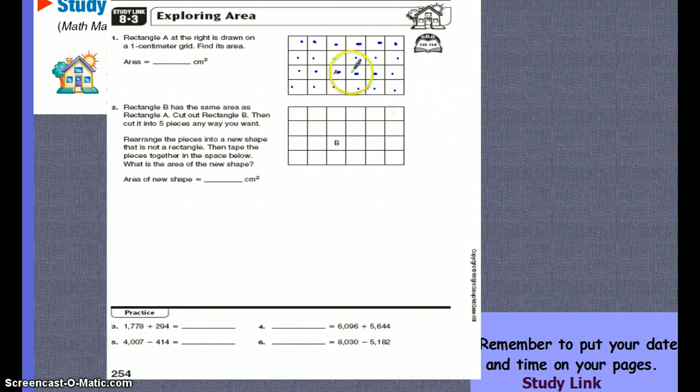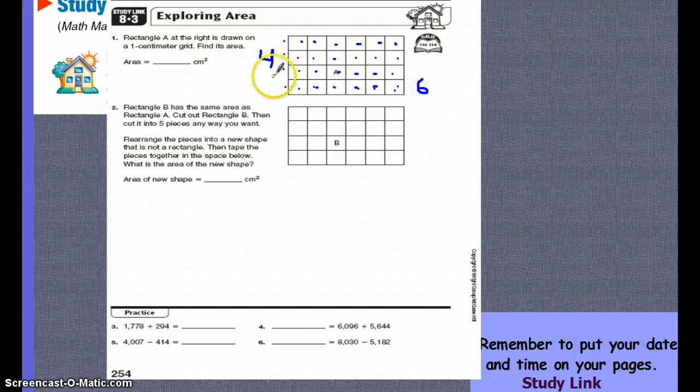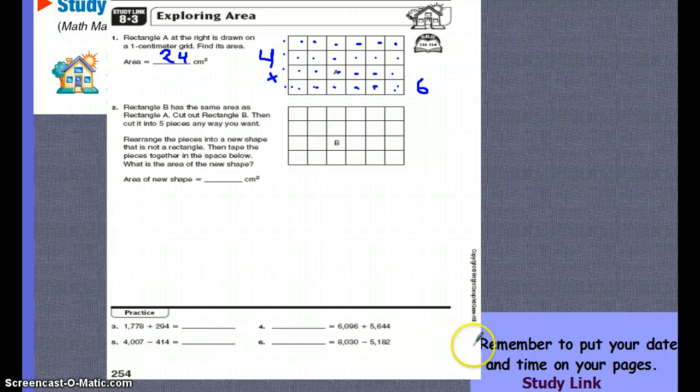There is a shorter cut though. You could just take one, two, three, four and write that number down. And then you could count across, counting this corner one again: one, two, three, four, five, six. And if you multiply those two together, four times six, you would also get twenty-four centimeters squared. Don't forget to do the practice down here on the bottom and then turn that in. See you next time.